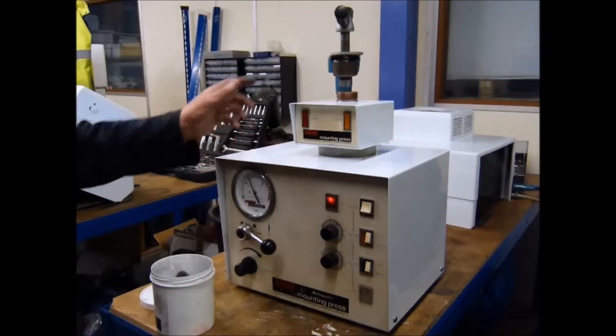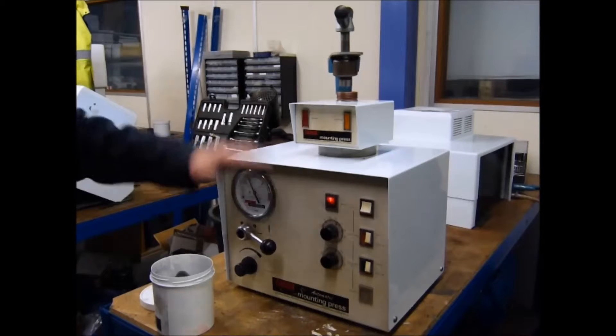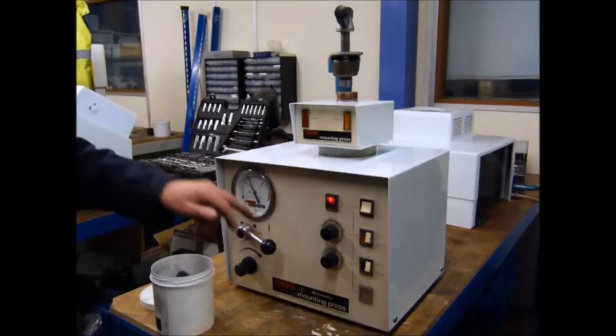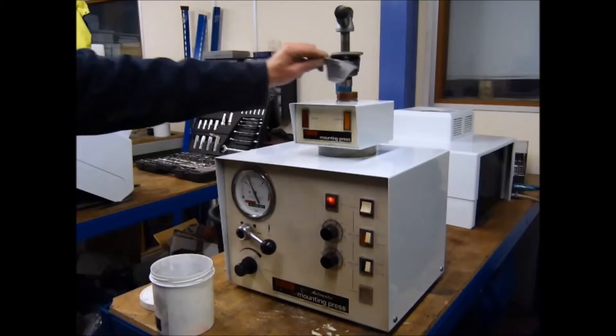You switch the machine on, you would raise the ram, position your sample on the top of the ram, lower the ram by pressing it down until it has reached its lower position, and then you would add your compound.